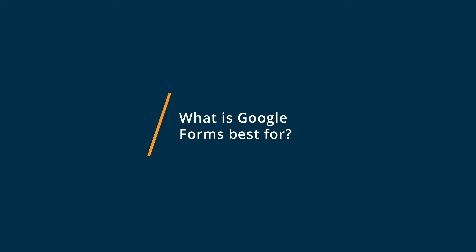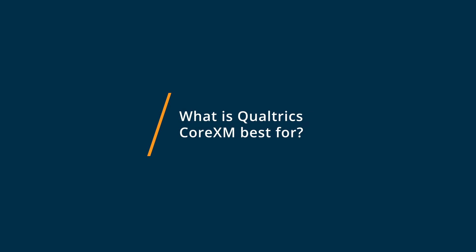Google Forms is great for quickly collecting data, organizing it into spreadsheets, and easily distributing the form. Qualtrics gives you a lot more customization options compared to Google Forms and has more advanced research collection features like anonymization and things like that.